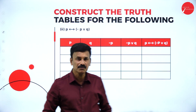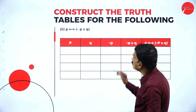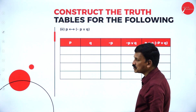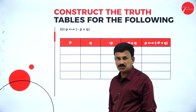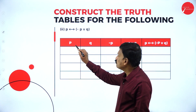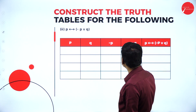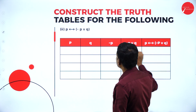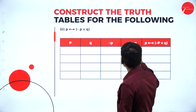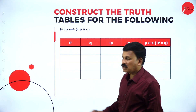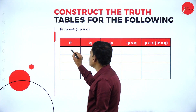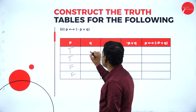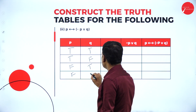Now move on to the next problem: construct the truth table for P biconditional to negation P disjunction Q. As usual write down P, Q, negation P, negation P disjunction Q, and the biconditional for P biconditional to negation P disjunction Q. For P it is true, true, false, false; for Q it is true, false, true, false.